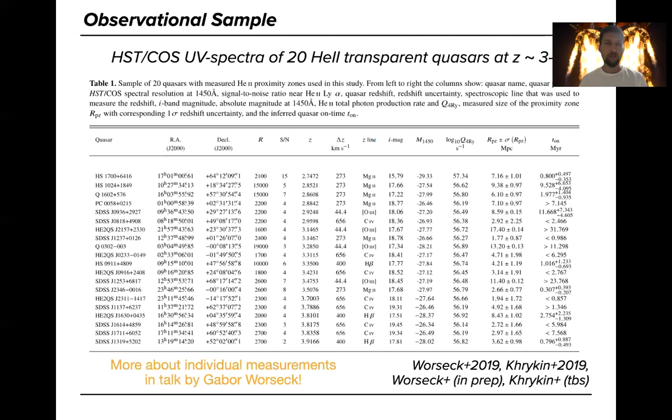So recently we investigated 20 helium-two-transparent quasars at redshift z of three to four. This table summarizes the main properties of our sample and two columns on the right show you the measured proximity zone sizes with error and the inferred individual quasar on-times.